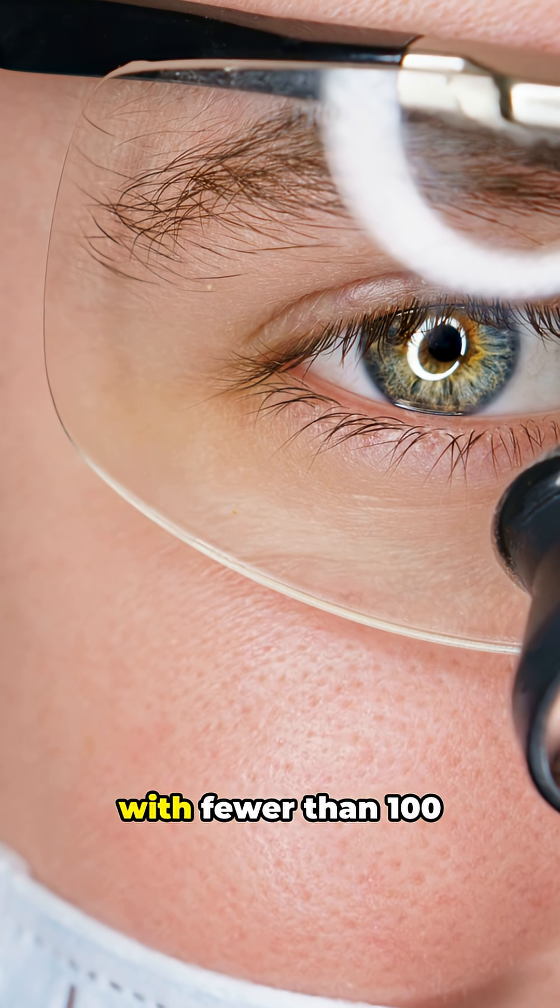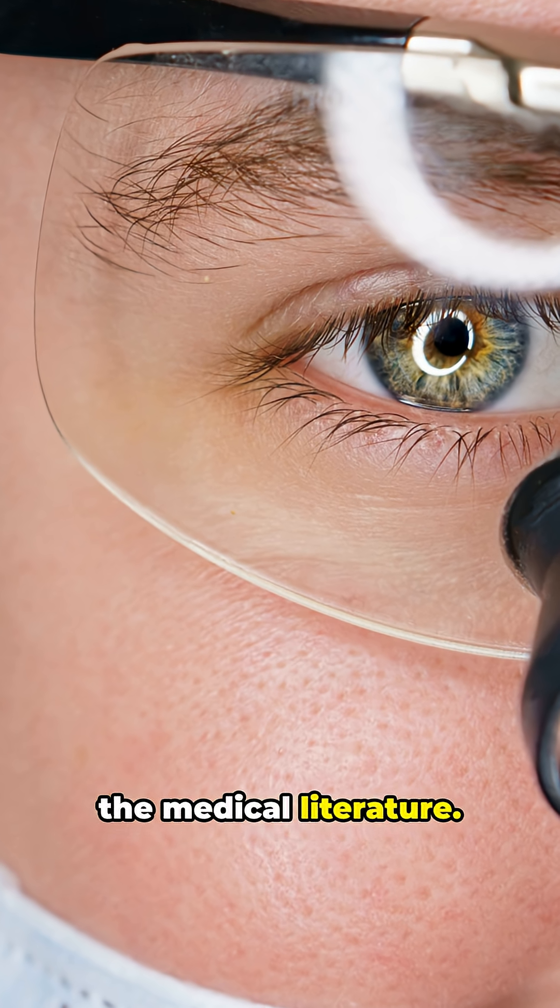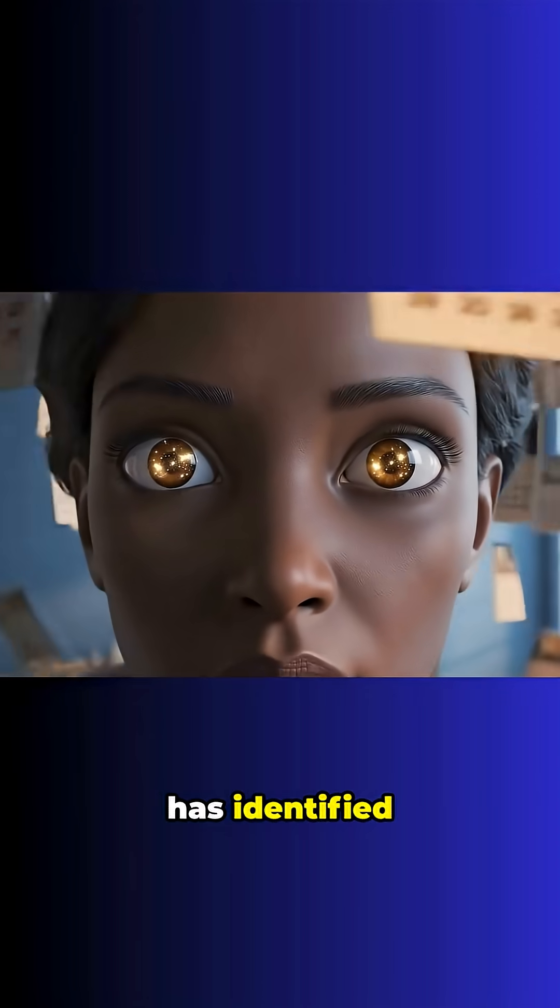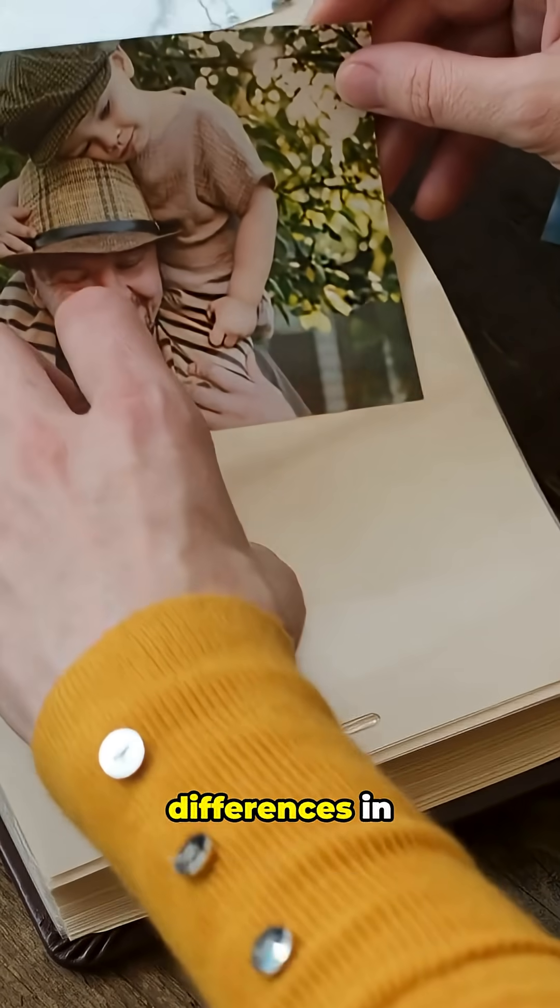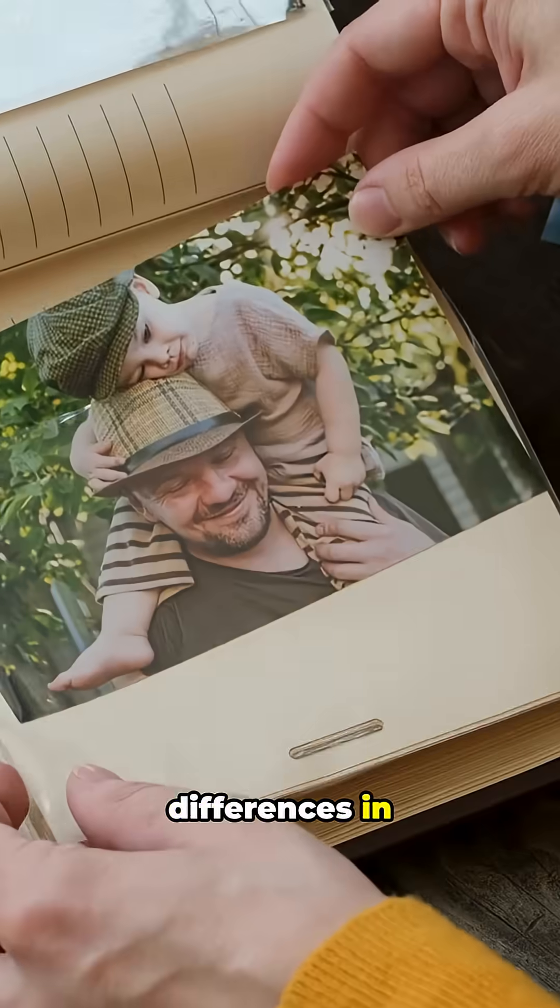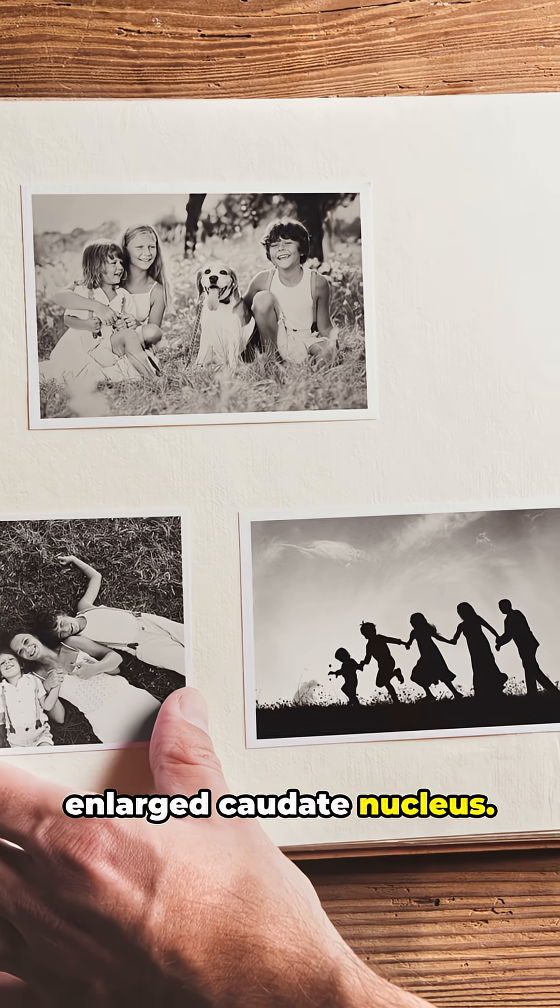It's a rare condition, with fewer than 100 cases documented in the medical literature. Studies are still ongoing as to why it occurs, but some research has identified potential brain differences in individuals with HSM, such as structural differences in regions like the hippocampus, amygdala, and an enlarged caudate nucleus.